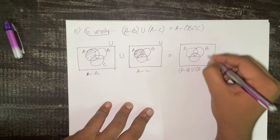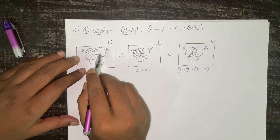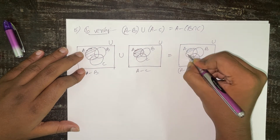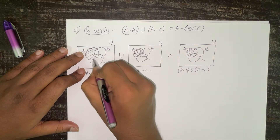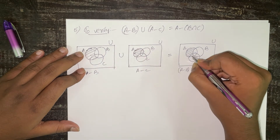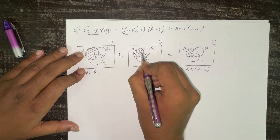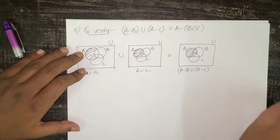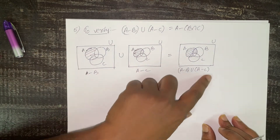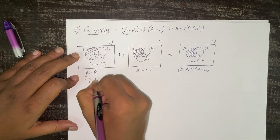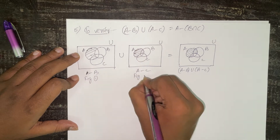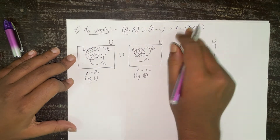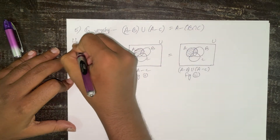Combining the two shaded regions gives us (A−B) ∪ (A−C). We have sets A, B, and C in the universal set. The common part is included, along with the region of A not in B and the region of A not in C. This is our LHS result — let this be figure 1, figure 2, and figure 3.